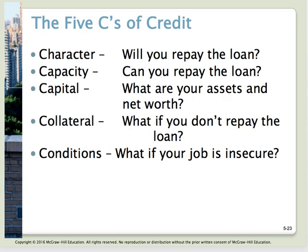Whenever a lender assesses whether you're a good risk, they look at the five C's of credit: character — will you repay the loan; capacity — can you repay the loan; capital — what are your assets and net worth; collateral — what do you have if you don't repay; and conditions — is your job secure, is there downsizing in your market, how long have you been employed?